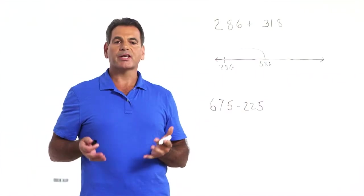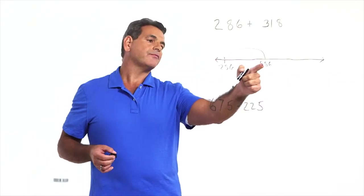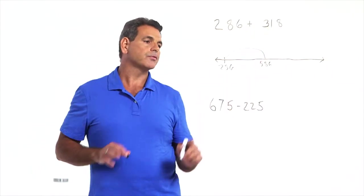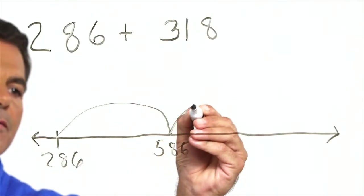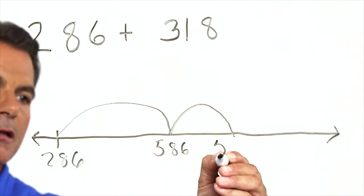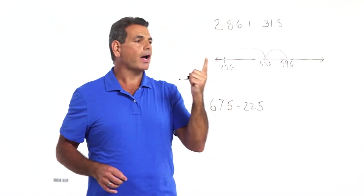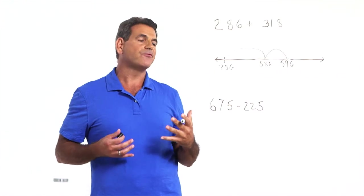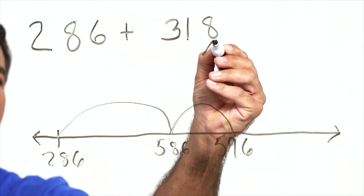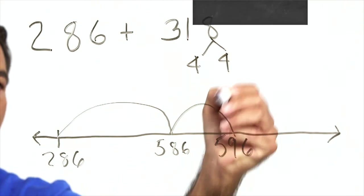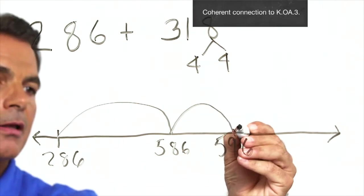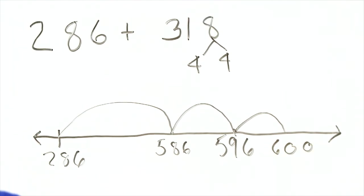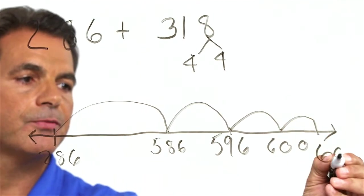So 286 plus 300 gets us to 586. Now I've added the hundreds. The next place we're going to add is the tens. I have eight tens and I have one 10. The six is coming along. The five is coming along. 596. Now I have an eight. And what a student should be able to do here is decompose that eight into four and four. Four from here gets you to 600, and four more from 600 gets you to 604.